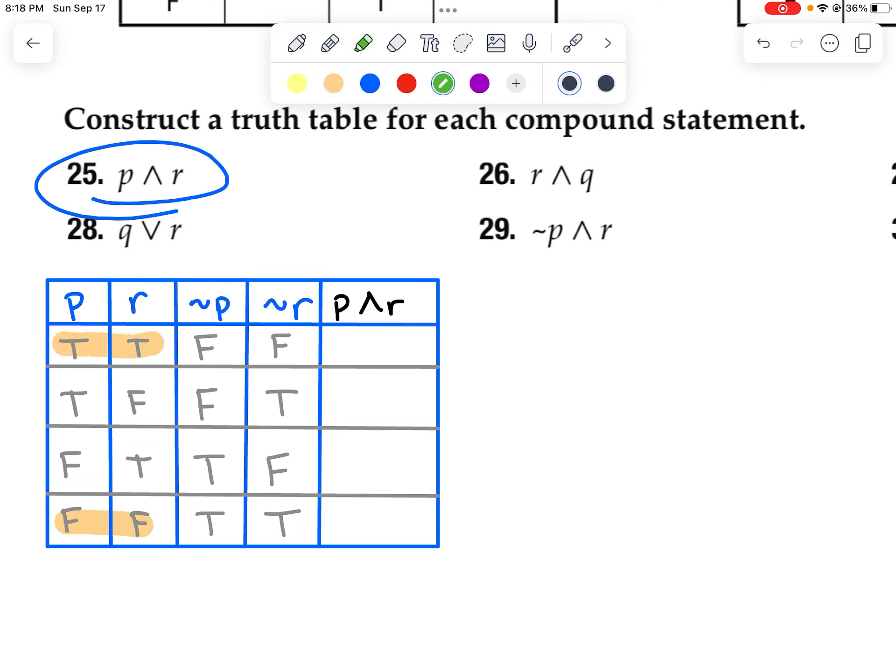Now here I have P and R. Let me change that. P and R. I only need to look at the first two sections here. If P and R are both true, that means I have a true statement. But what if one of them is false? Because this is a conjunction, I need both of these to be true. So if one of them is false, it's false. And if they're both false, then false and false gets you a false statement.